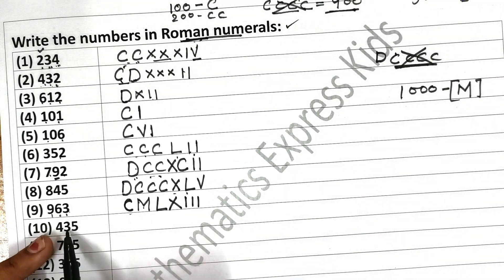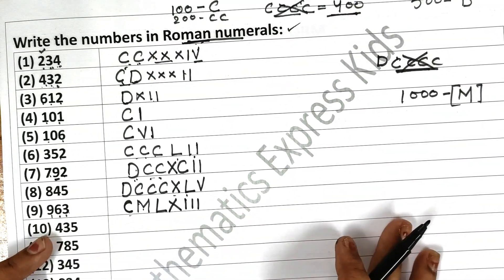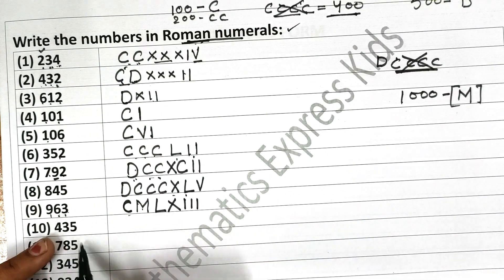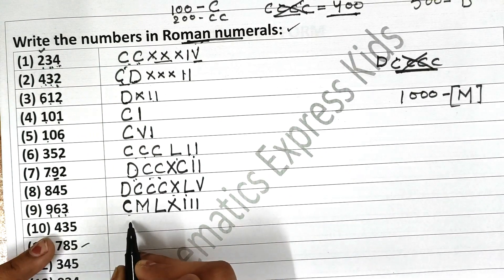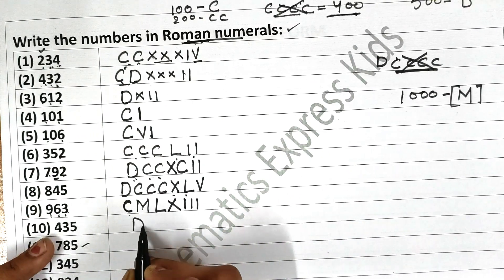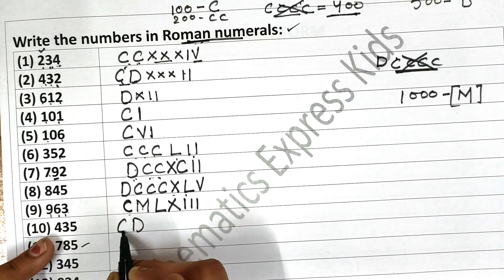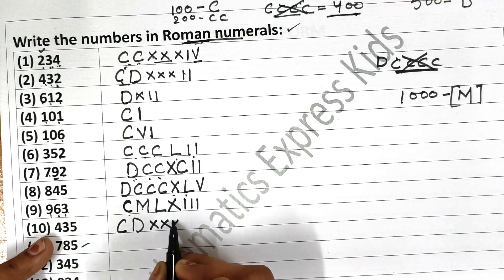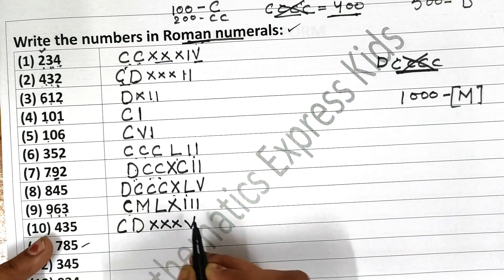Now come to the next one, that is 435. For 400: first write 500, subtract 100 from it — CD. Then 30 as XXX. And then 5 as V.